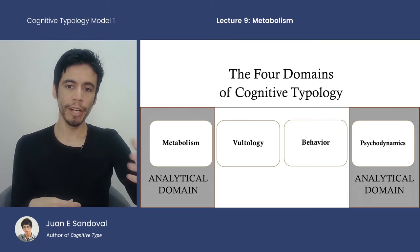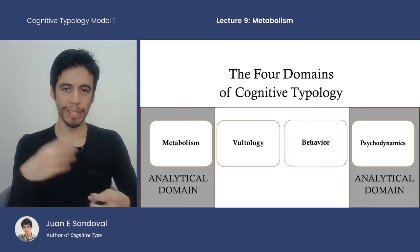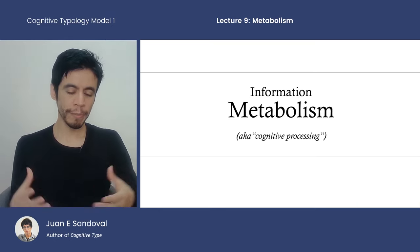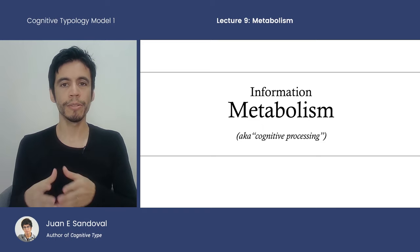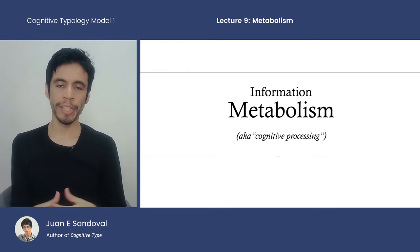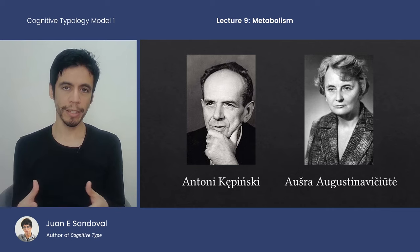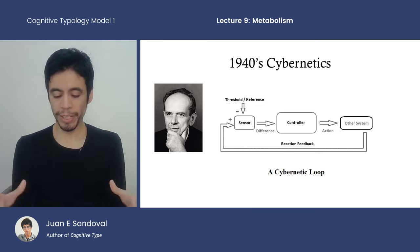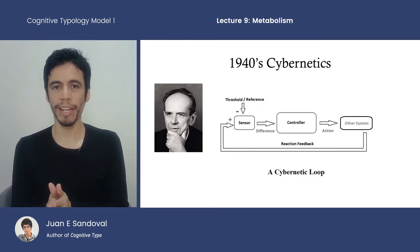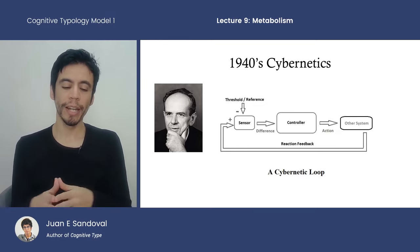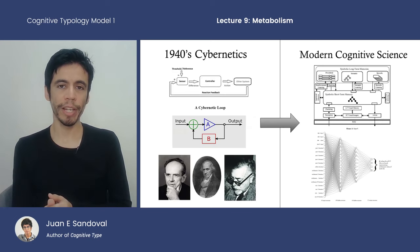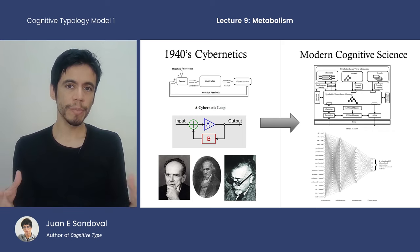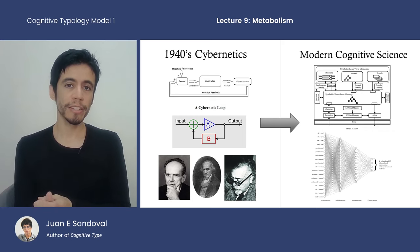CT does the opposite — it tries to start first by anchoring to reality, then branches out from there. Now we're branching into theoretical territory: metabolism and psychodynamics. The domain of information metabolism in CT relates to cognitive processing. The term information metabolism was coined by Anthony Kapinski and also used by Asher Augusta in Socionics. Kapinski modeled his ideas on the cybernetics research of his day, which was in the 1940s, and that has later evolved into what we now know as cognitive science.